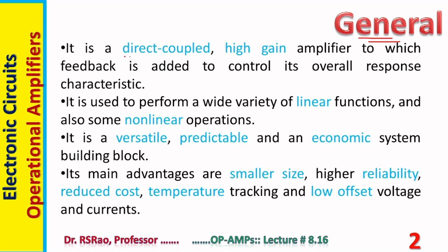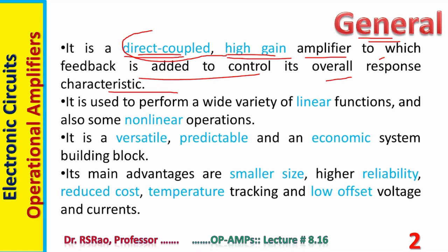What is an op-amp? It is a direct-coupled, high-gain amplifier to which feedback is added to control its overall response characteristic. Basically, it's a DC amplifier like a Darlington pair or a Cascode pair, but it is associated with very high gain. It is used to perform a wide variety of linear functions and also some non-linear operations. It is a versatile, predictable, and economic system building block — its behavior is predictable and it is not expensive.